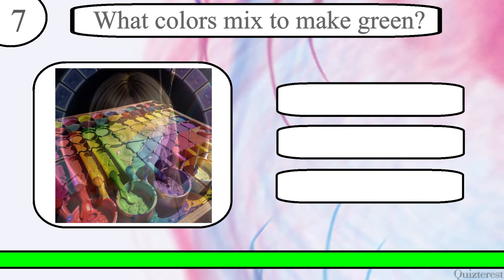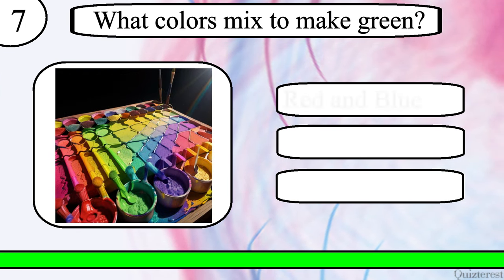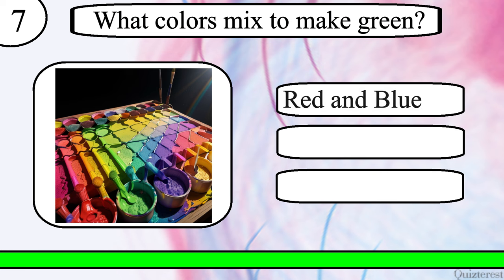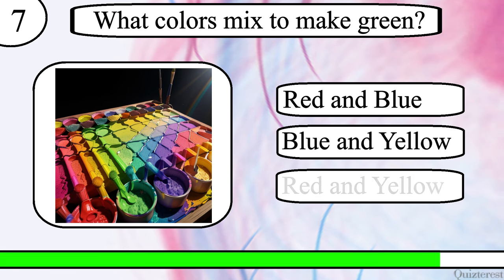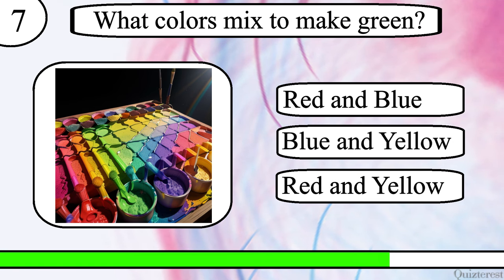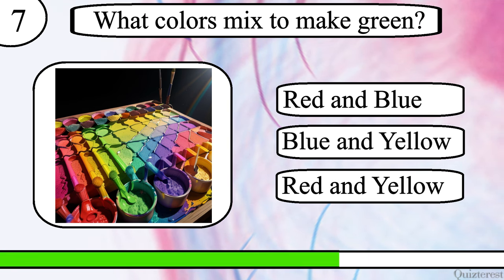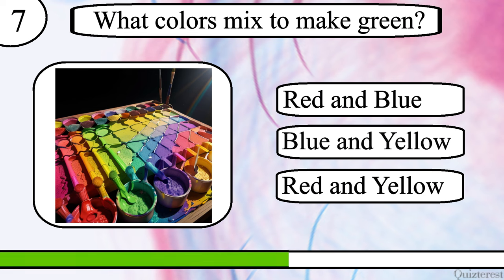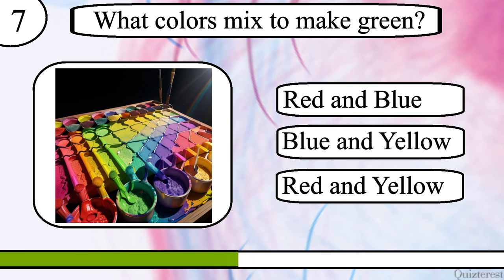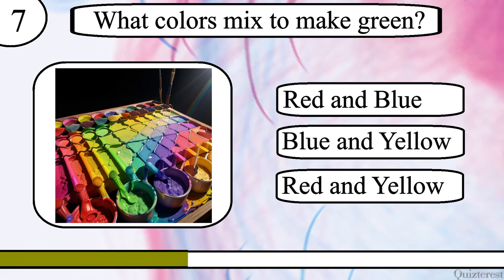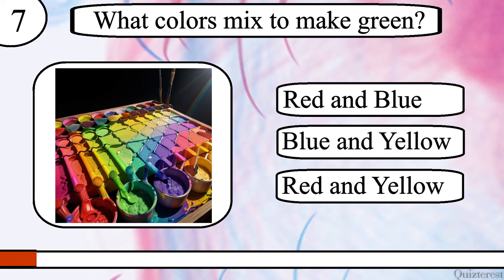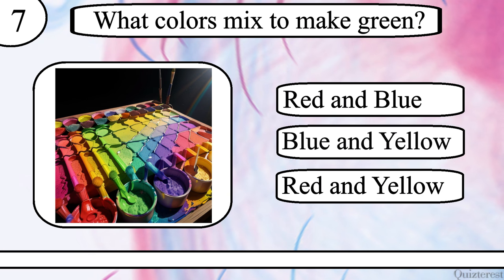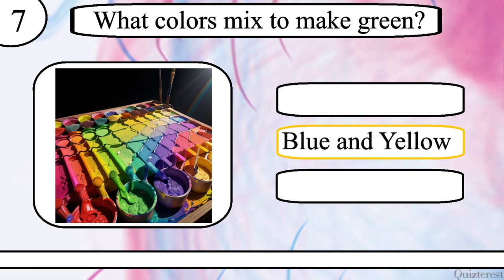Question 7. What colours mix to make green? Red and blue, blue and yellow or red and yellow? The correct answer is blue and yellow.